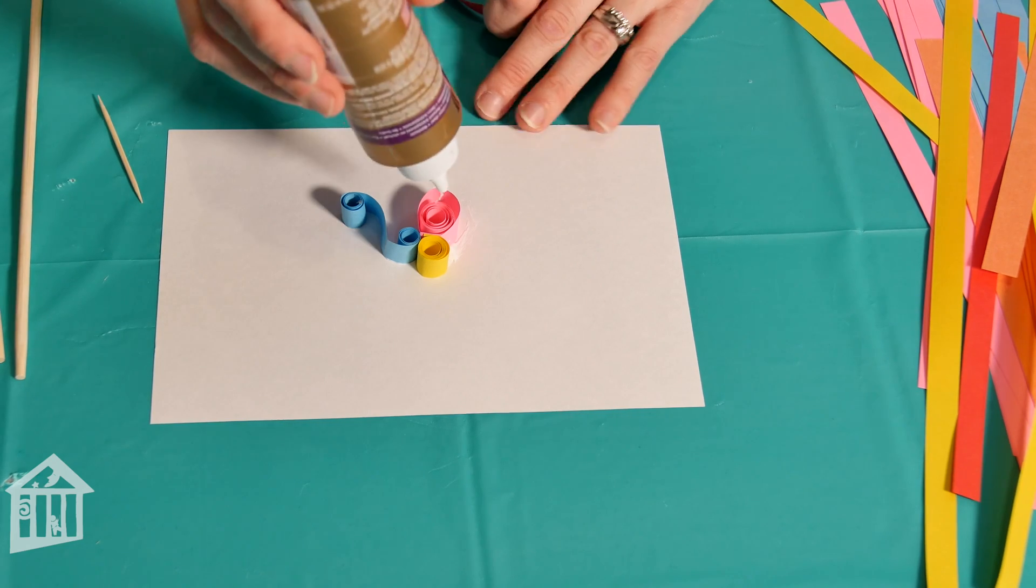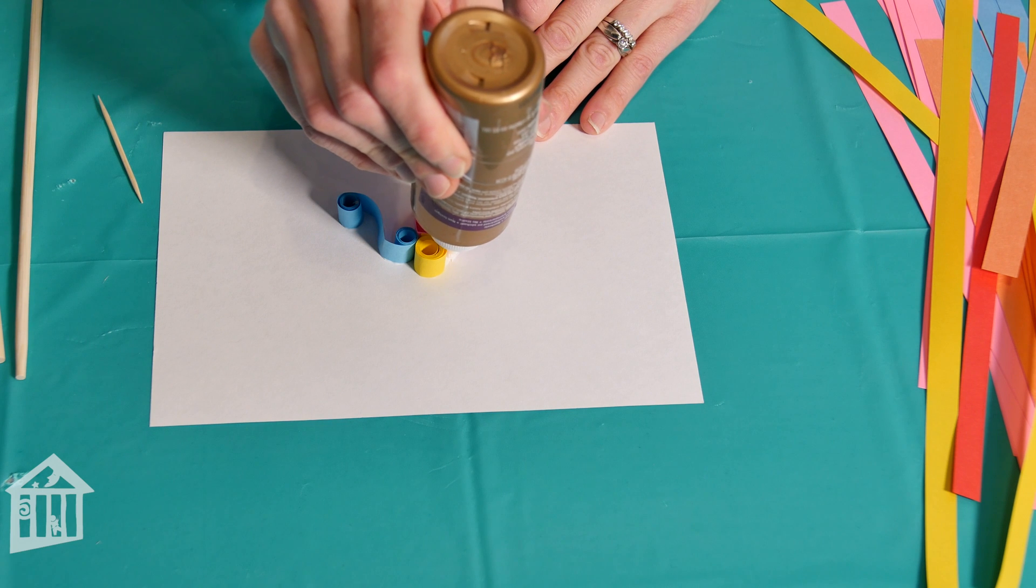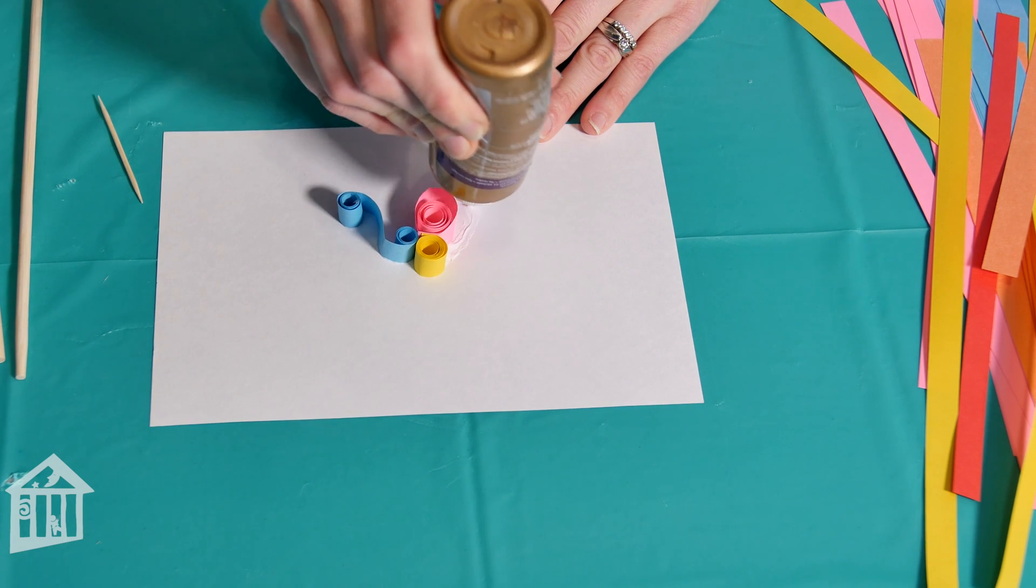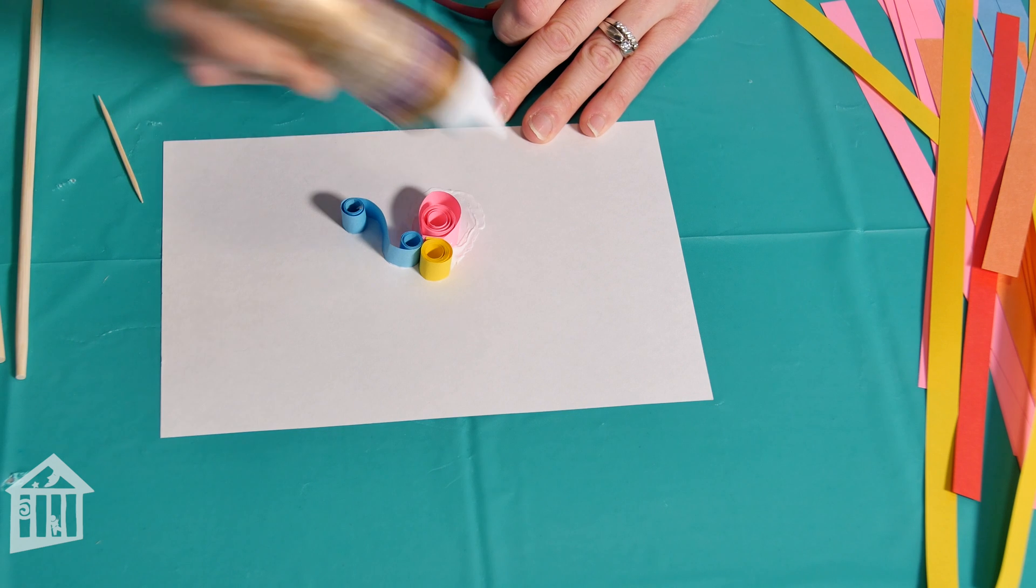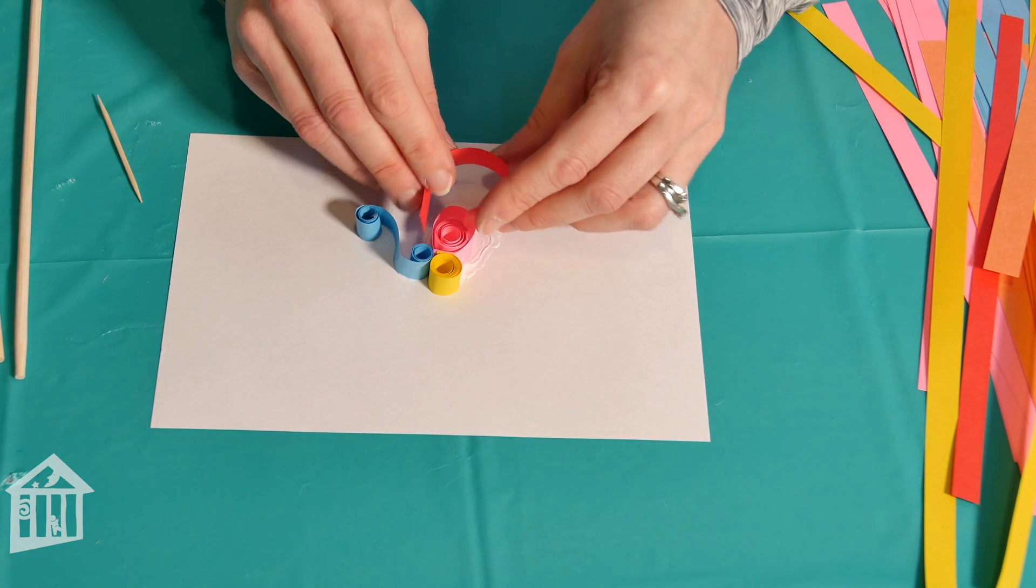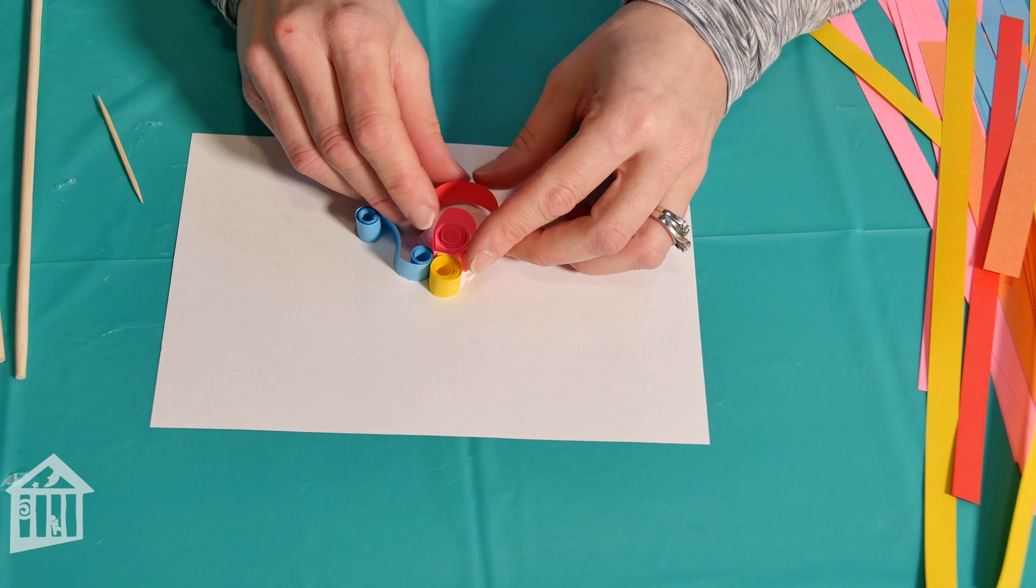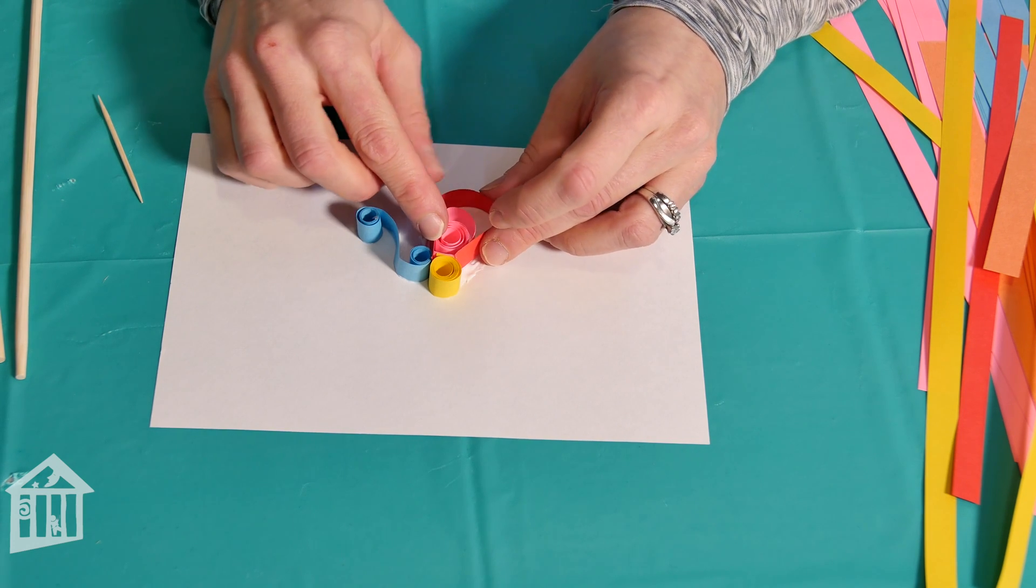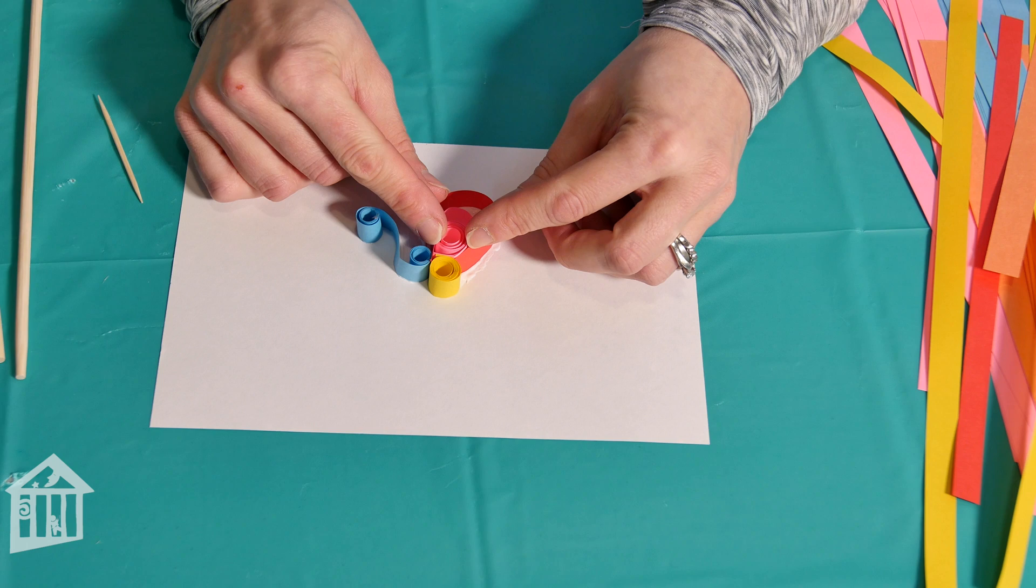One last technique I'll show you today. If you don't want to quill your paper at all or curl it at all you can just create a border or a straight line by marking your glue line on your paper and holding it in place.